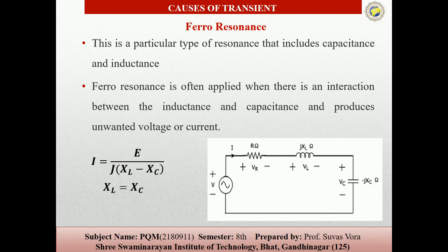When the inductor and capacitor values are the same, resonance occurs: XL = XC. At resonance, the current through the network is high, which is represented by the resistance. For the linear network at resonance, the voltage equation is V = E + jXL×I. If the inductor and capacitor produce resonance in our system, transients are generated because of these equations.